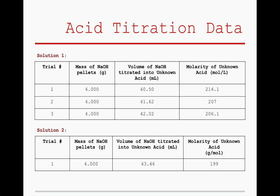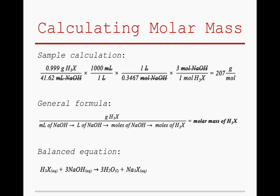Now, all that remains to be determined is the molar mass of the acid, as calculated in each trial. Using dimensional analysis, we can convert milliliters of titrated NaOH to liters of NaOH, from liters of NaOH to moles of NaOH using the molarity, and from moles of NaOH to moles of triprotic acid using the balanced chemical equation shown here. Consequently, if the mass of the acid — measured at the beginning of each trial — is divided by the moles of triprotic acid, the molar mass of the unknown is obtained.